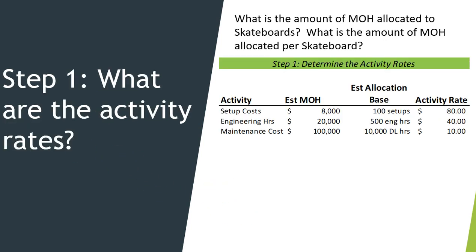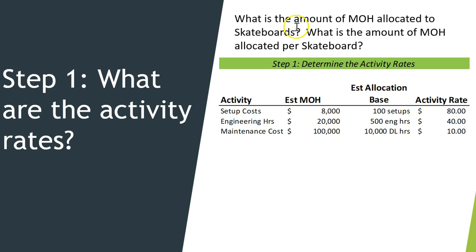The first step is to figure out what the activity rates are. The question asks for the overhead allocated to skateboards and the amount per skateboard, but in step one we don't need to know what we're allocating to, because we're using the total data. We take the estimated overhead and divide it by the estimated allocation base — in total, not just for skateboards — and that gives us an activity rate.